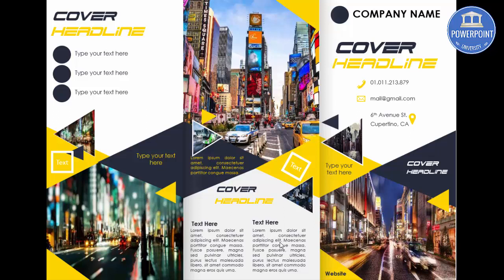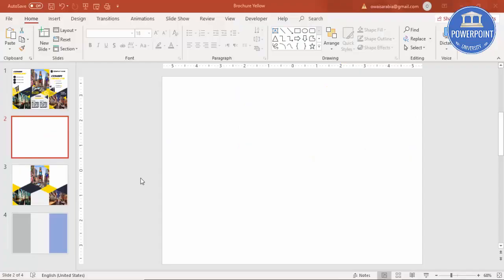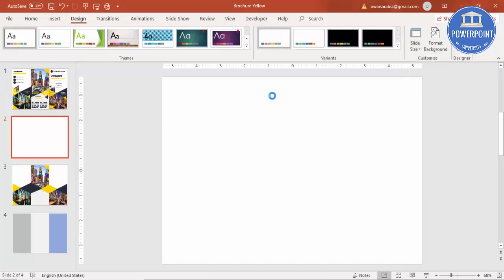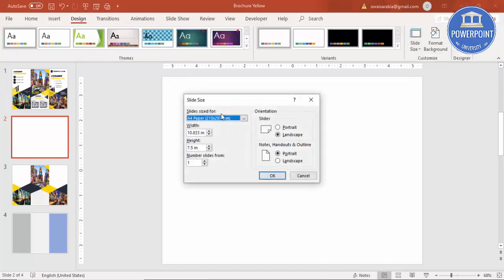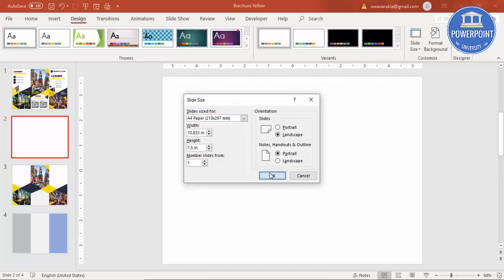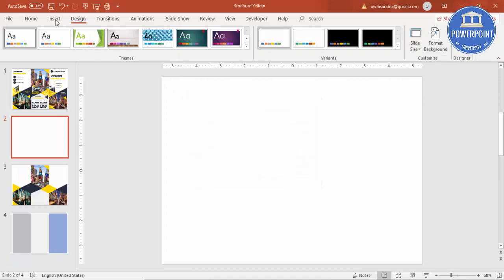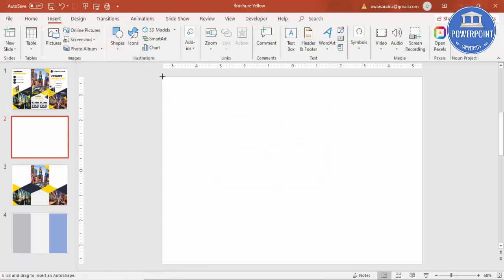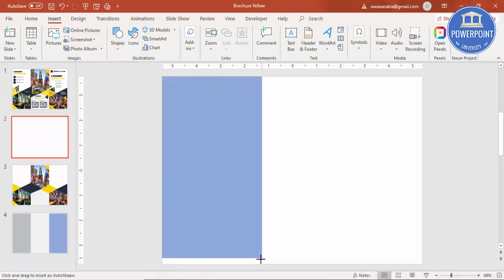Let's see how to create this orange and gray brochure design in PowerPoint. Add a new slide, go to Design, Slide Size, select Custom Slide Size, and from the dropdown select A4 size and click OK.